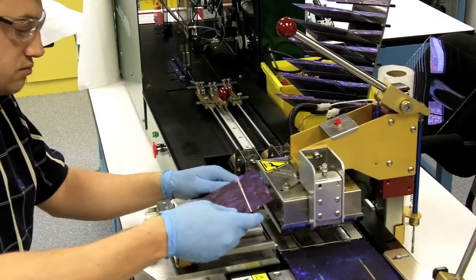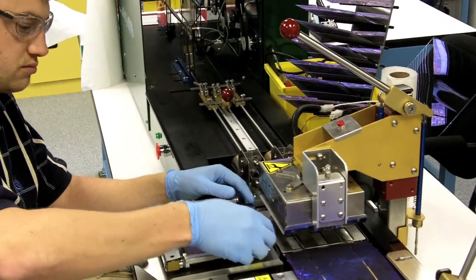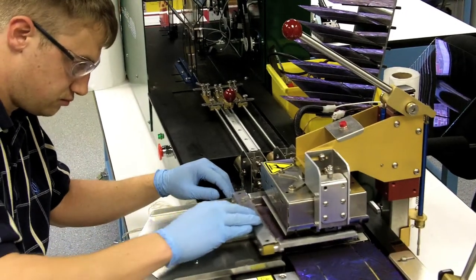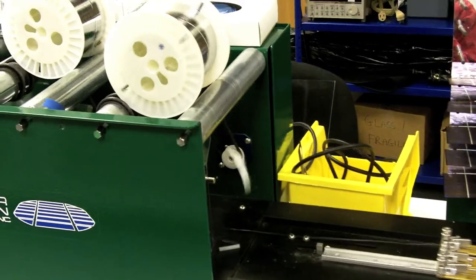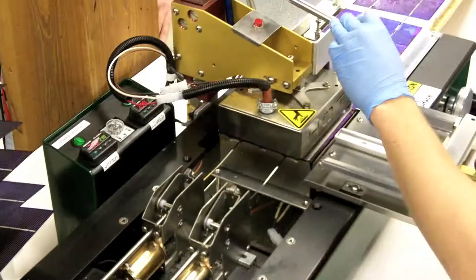After the cells are sorted by performance, Adam Stokes connects them together. This machine fuses flat conductive metal tapes, called bus bars, to silver contacts on each solar cell.